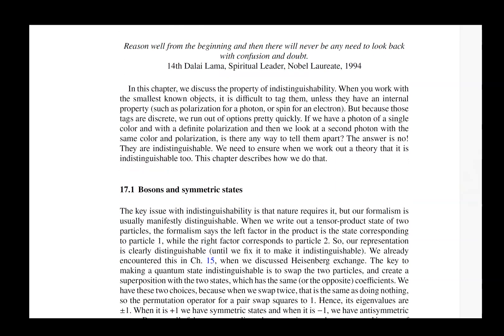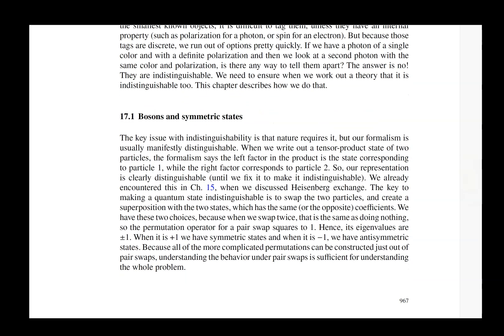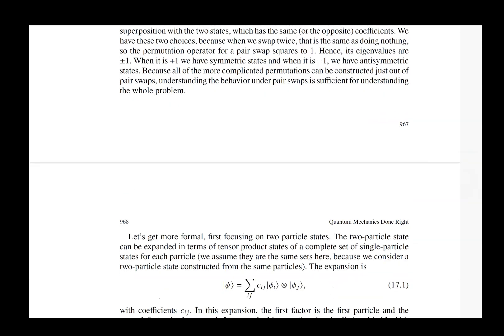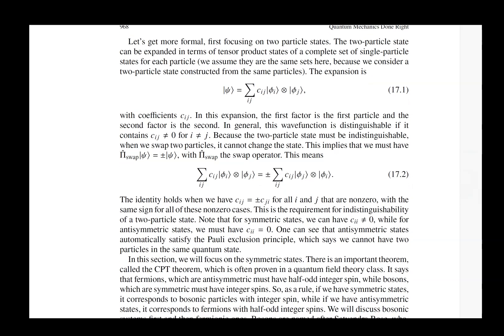We start with the key notion in quantum mechanics of elementary particles: all electrons are the same, all photons are the same — they're indistinguishable. Because they're indistinguishable, we have to adjust our formalism. The problem is that when we write down a formula to represent a quantum state we have to pick an ordering for our particles — this is electron one, this is electron two — and unless we do something to our formal expressions they retain those labels. So we have to add in all other possible orderings, and if we had a large number of particles this becomes very laborious and difficult to manage.